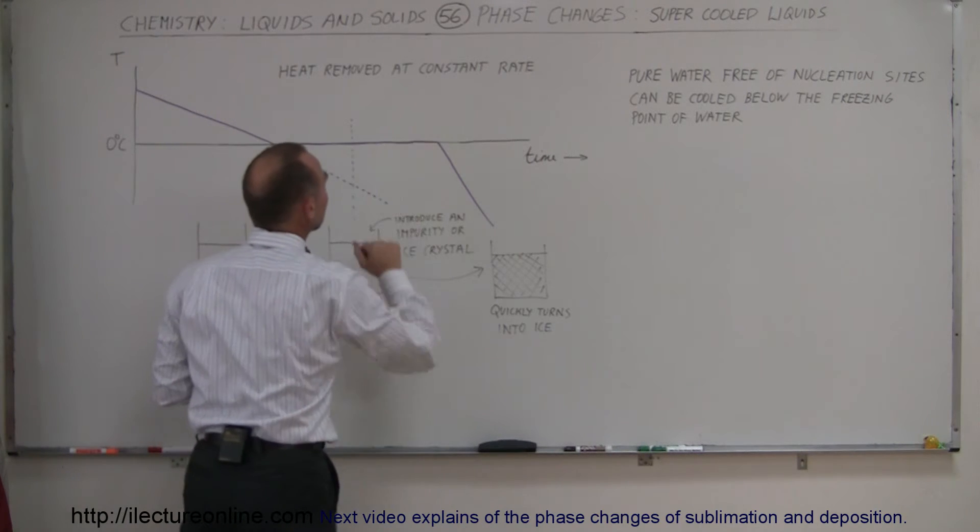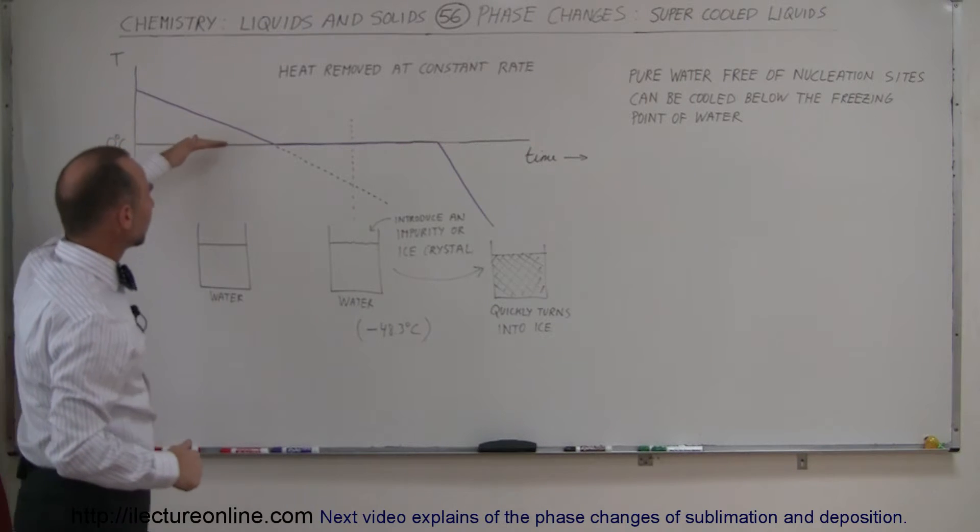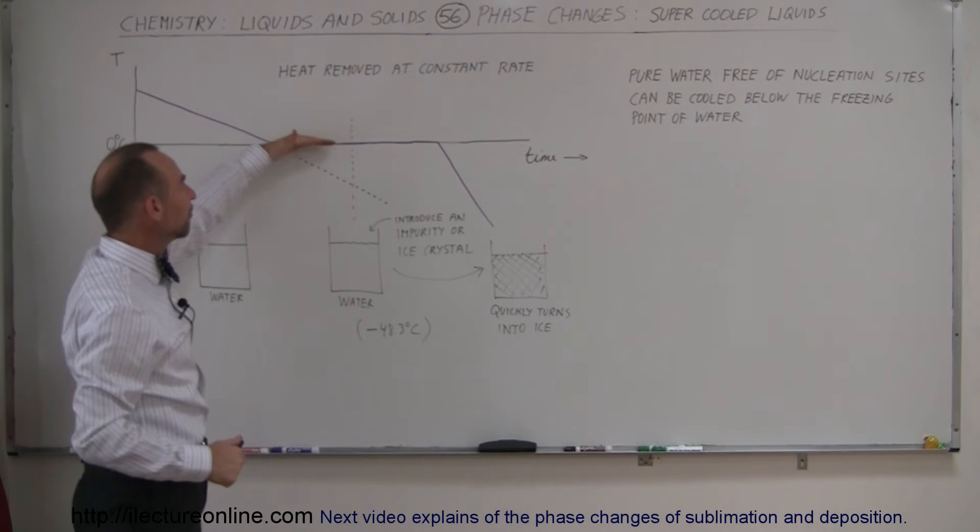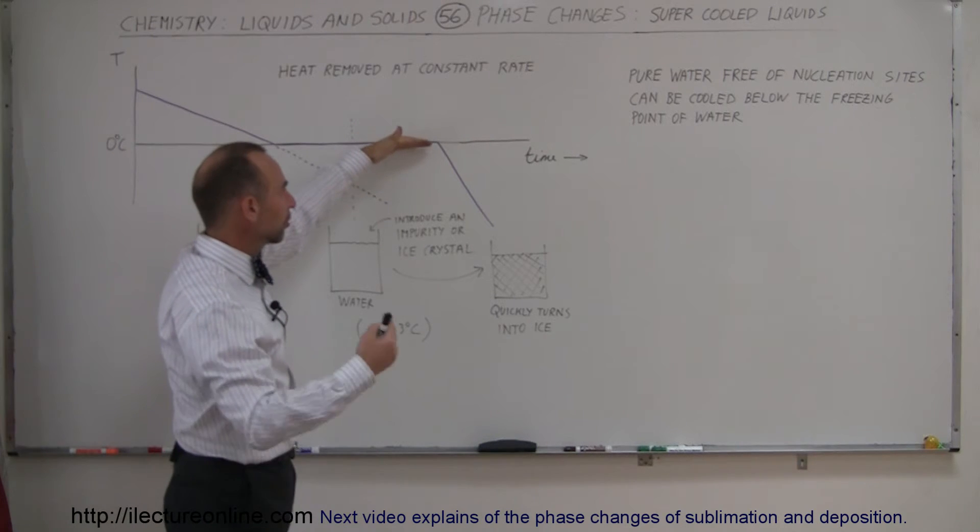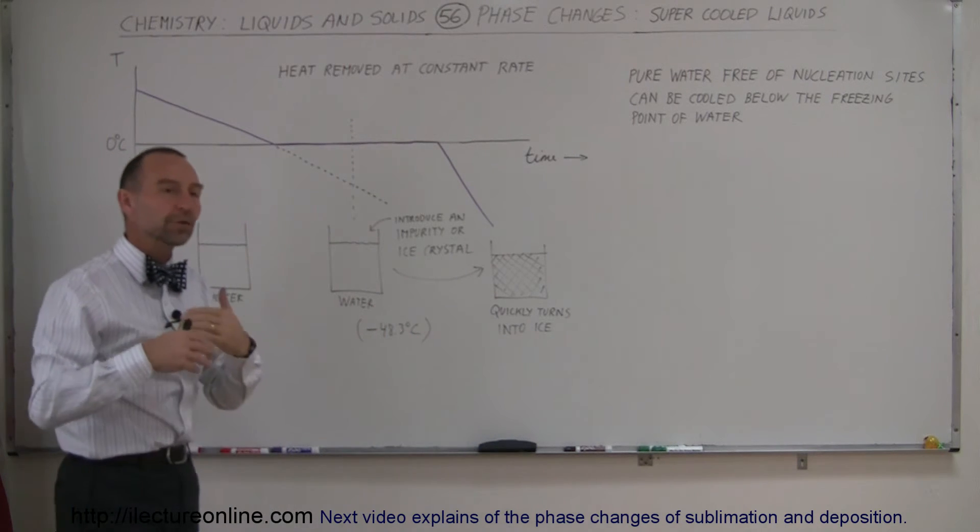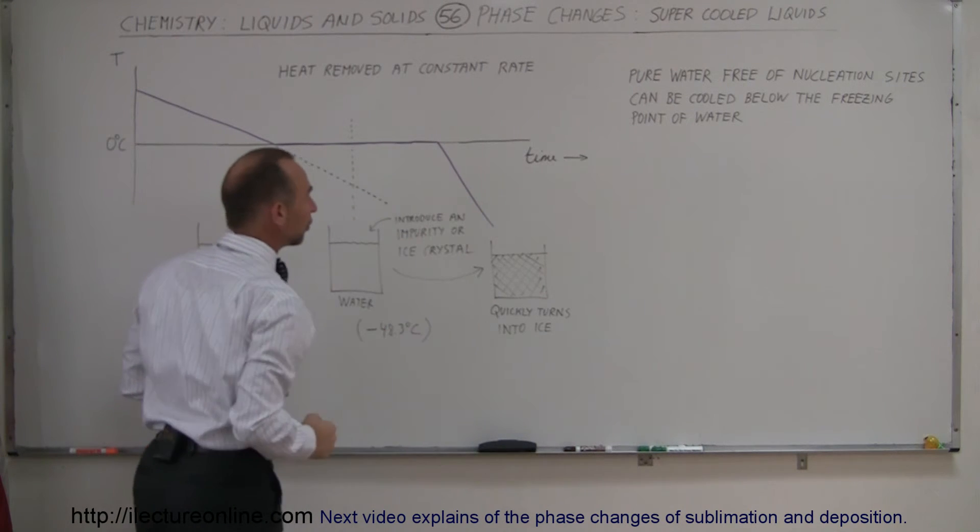So imagine here removing heat at constant rate. And so normally you would see the equilibrium phase between the water and the ice. And for a time, as long as you continue to remove heat, more and more of the water would then turn into ice until all the water has turned to ice and then the ice would continue to cool down.